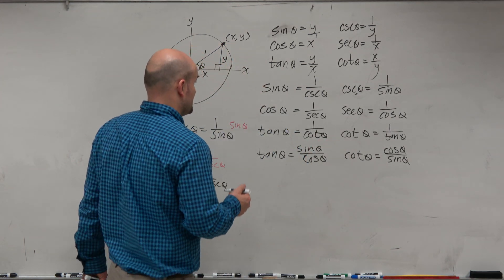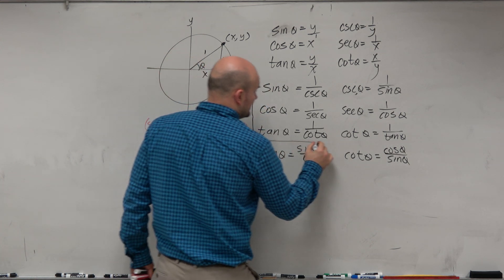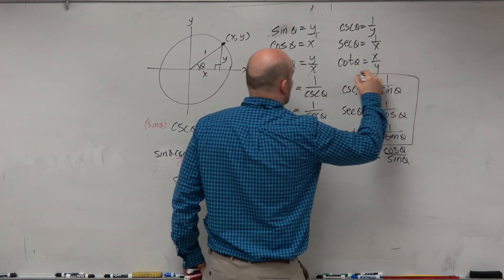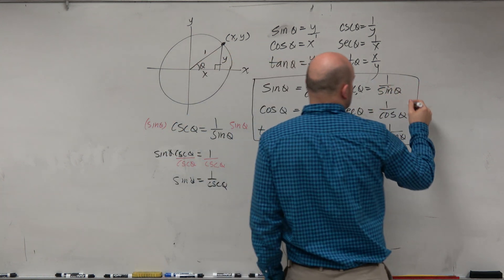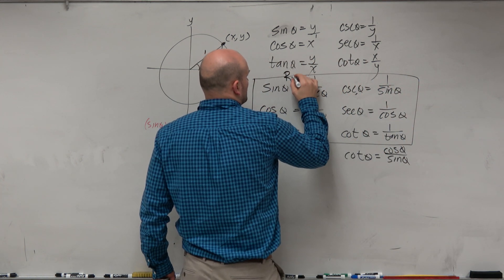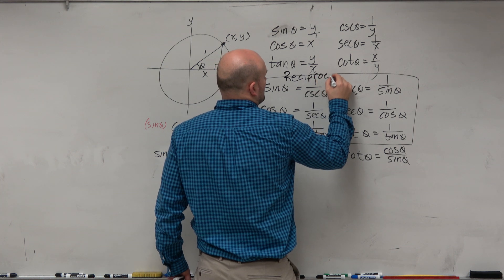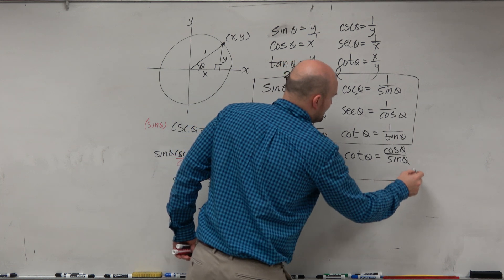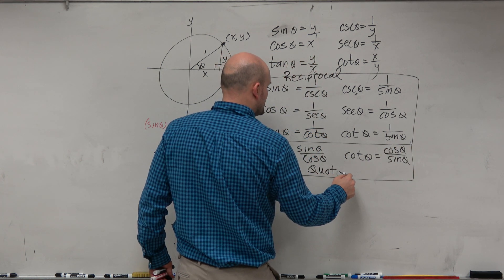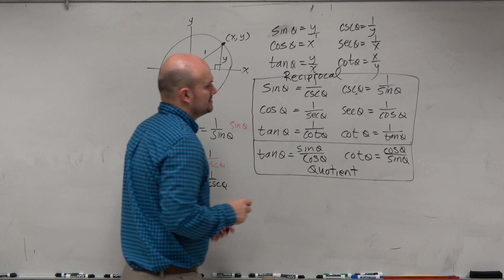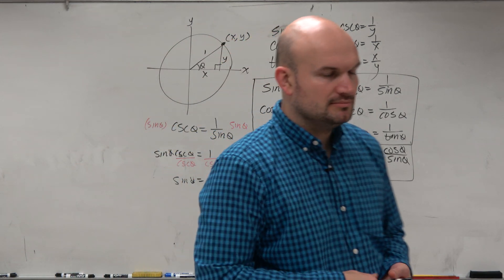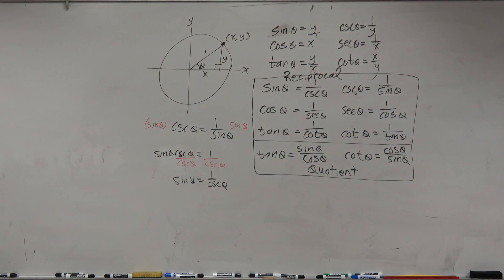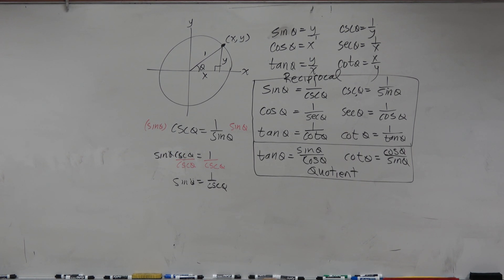Now, we have some names for these, actually. These are what we call the reciprocal identities. And these are called the quotient identities. Do you have to know them? Yes. Do you have to memorize them? No. Why? Because you're going to do enough examples in this class, you're not going to need to memorize them. OK?